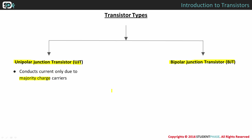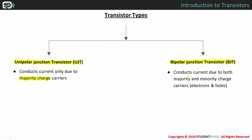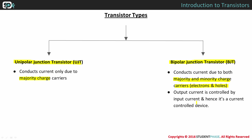Whereas in BJT, current is conducted by both types of charge carriers, i.e. majority and minority charge carriers. BJTs are current controlled devices, since output current is controlled by the input current. Different types of BJT are NPN type and PNP type.